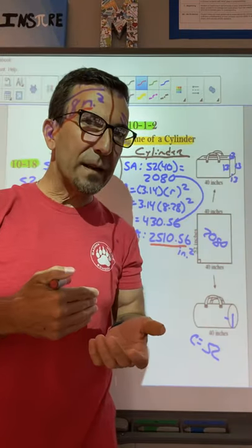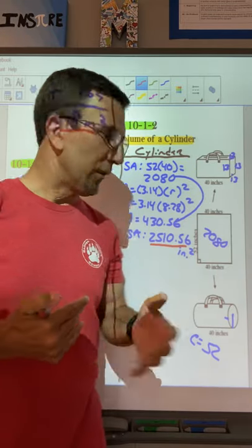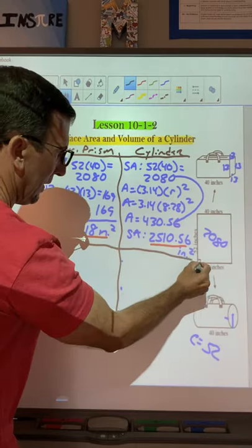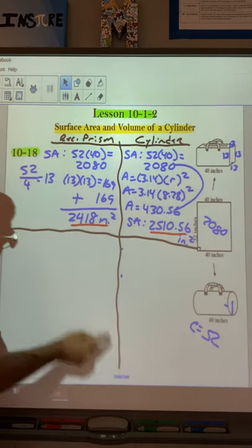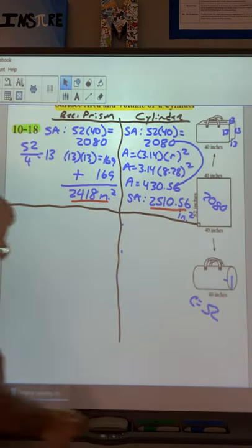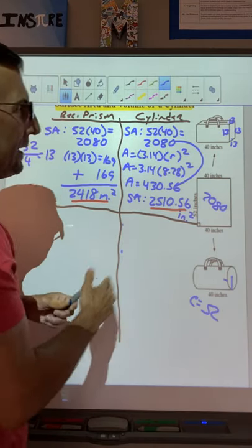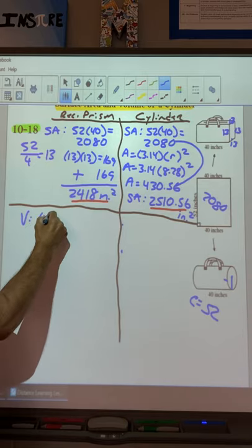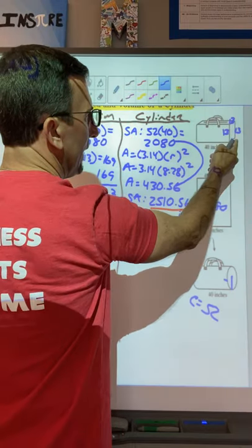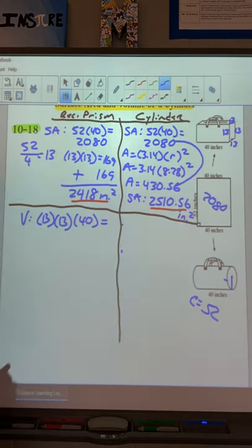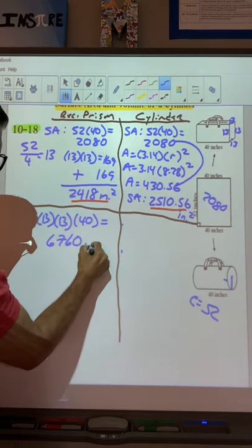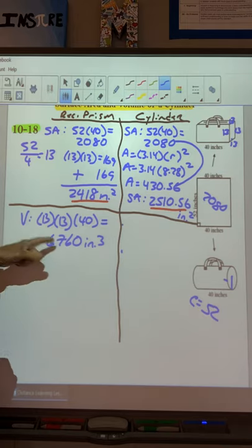Now the question I have is, do I want to spend the extra cost? Does it give me a lot more volume? So can I hold more in here than I can in here? Let's find out. Let's do the volume now. Okay, so I'll draw a line here. So volume. So we need the area of the base multiplied by the height. So the area of the base multiplied by the height. So I have 13 times 13. That'll give me this base. And then multiply it by 40. So do 13 times 13, and then multiply it by 40 for me. And you should get 6760 inches cubed. So that's how much volume we get out of that one.